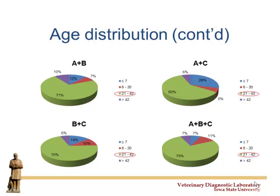Looking at age combinations — how many times we find A and B together, B and C, A and C, or all three — by far the most common combination is post-weaning because you're mixing pigs. You're mixing litters where potentially one sow had type C, this sow had type B, and that sow had type A; you get them all together and get post-weaning diarrhea with A, B, and C all together. The bigger question is why are we having such poor immunity to these non-group A rotaviruses in the farrowing crate.